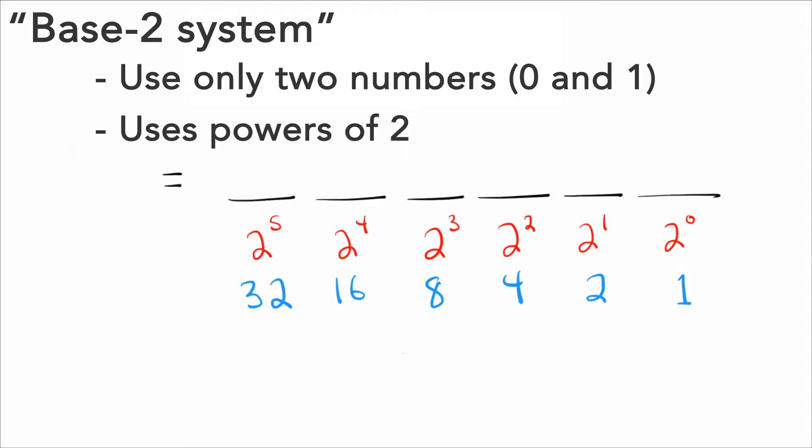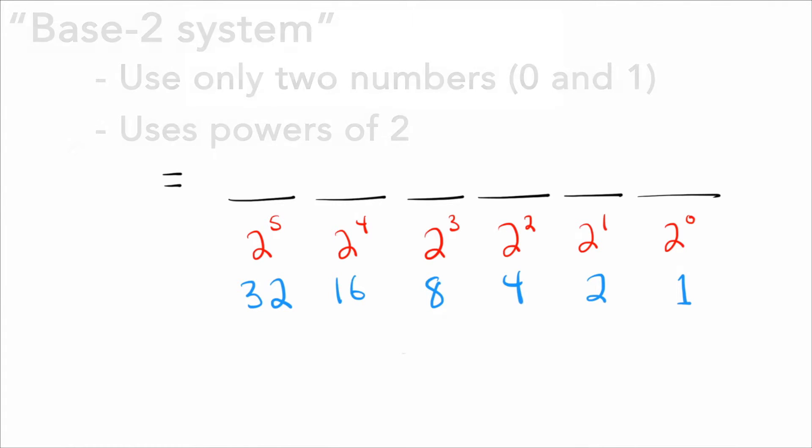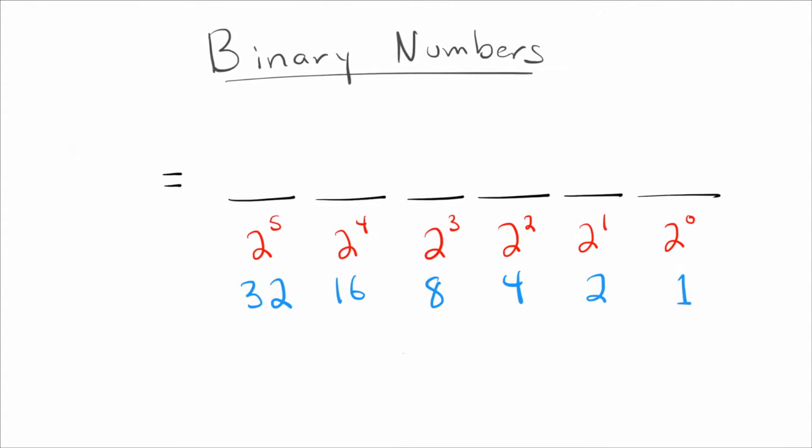So for example, here I've got 2 to the 0, 2 to the 1, 2 squared, as high up as you want to go. Now, I don't want you to have to keep computing 2 to the fifth in your head over and over again. So I went ahead and wrote beneath what those are. Two to the zero is one, two to the one is two and all the way up.